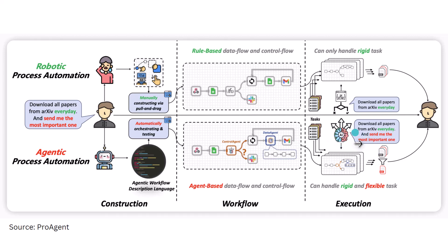In Agentic Process Automation there will be an AI flavor, so it will act more intelligently on the data retrieved from source systems. However, RPA will just follow a rule-based structured workflow — based on if-else conditions — with no learning or decision making power. As shown in the diagram, RPA can only handle rigid tasks, while APA can handle both rigid and flexible tasks. RPA will just download all the papers, but APA can also classify which ones are important and send only those for your action.